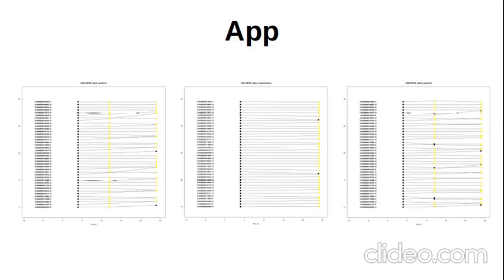Moving on to the app that Zaheve developed: the idea is you can input your own genes into this platform and it will show you how these genes change over the time course, using the SARS-CoV-1 and 2 RNA-seq data. You can get an idea of the gene trajectories and which genes are changing throughout the time period. We've got the mock, CoV-1, and CoV-2 interfaces for the app shown here.